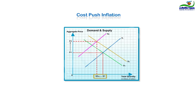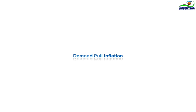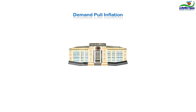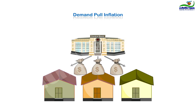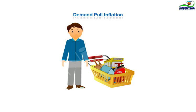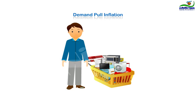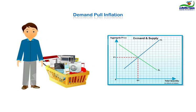Now, let us see demand-pull inflation. Suppose your central bank decides to drop money bags at the roof of households for making them rich. People who will get this extra money will buy maximum of goods and services to make maximum use of this. Consequently, the demand in goods and services market will rise exponentially from D1 to D2. This supply, however, will rise at its normal pace from S1 to S2.